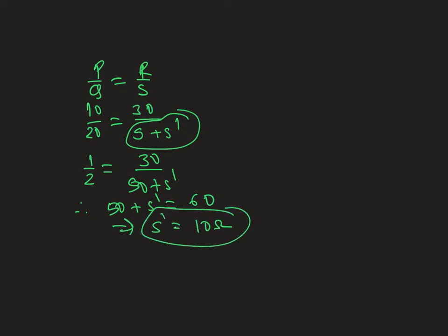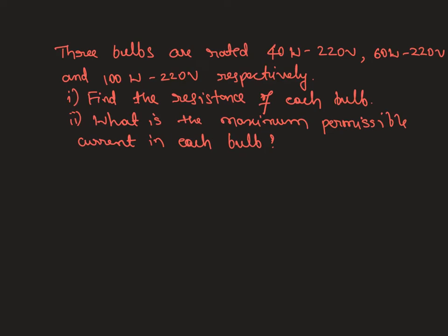The next problem: Three bulbs are rated as 50W at 220V, 60W at 220V, and 100W at 220V respectively. Find the resistance of each bulb.